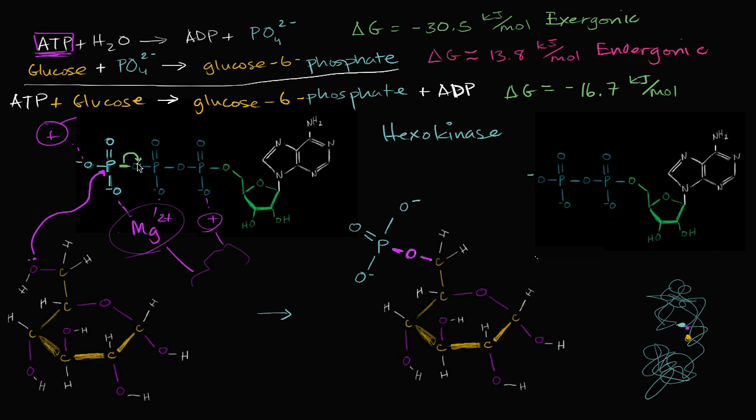And so that, this oxygen, is this oxygen right over here and now has a negative charge. And so what we've just resulted with is glucose-6-phosphate and ADP.